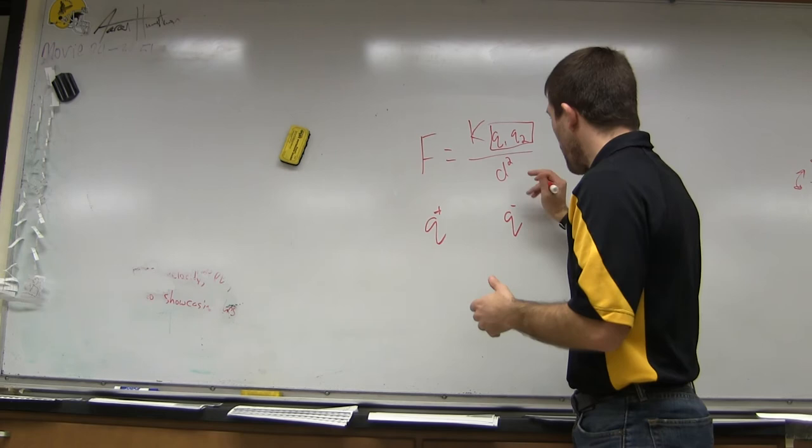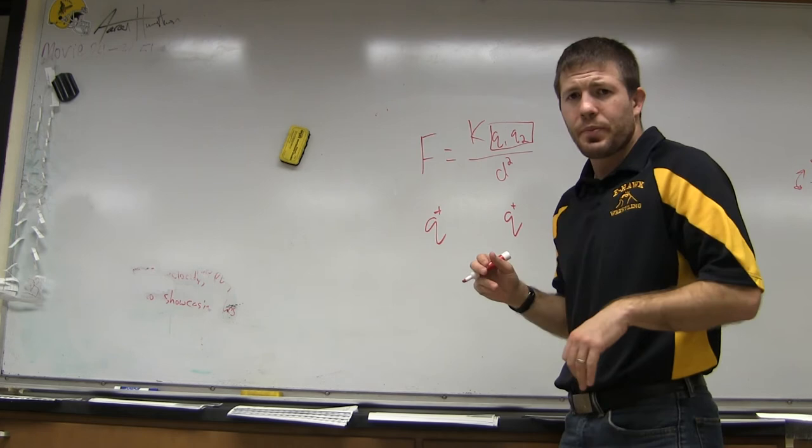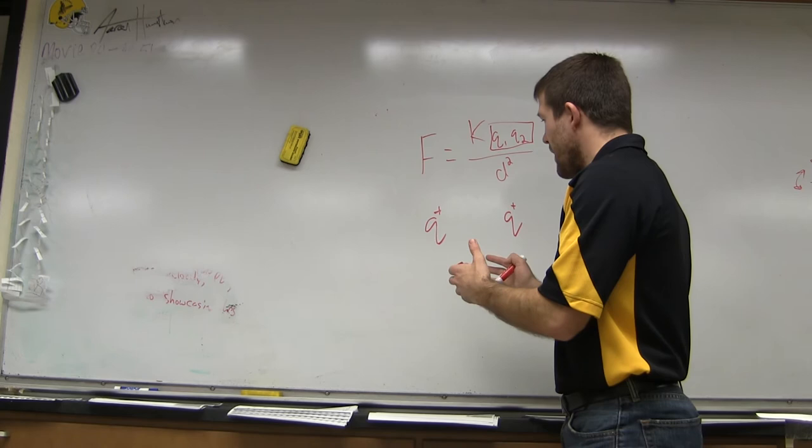They're attracted to each other or in some cases they are repelled from each other, but they have the exact same type of relationship where they're attracted or they're repelled from each other. Now what we're also dealing with is how far they are away from each other.